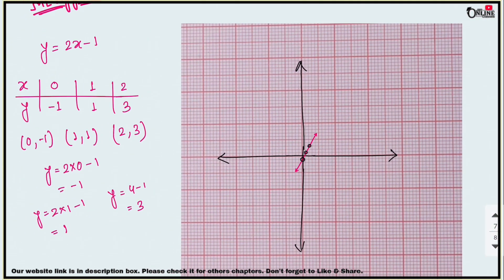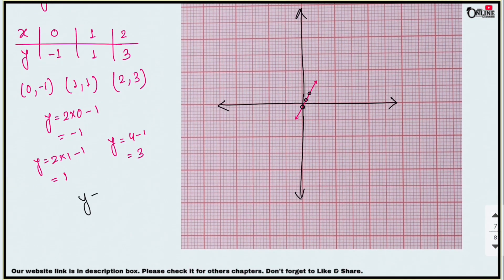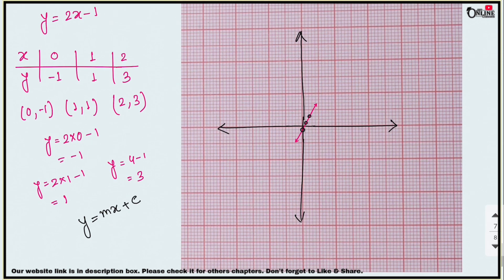Now find the slope and y-intercept of this line. Using the formula y = mx + c and comparing with y = 2x - 1: the slope m = 2 and the y-intercept = -1.